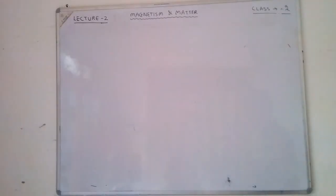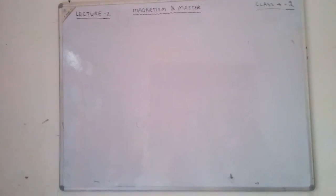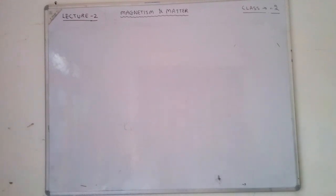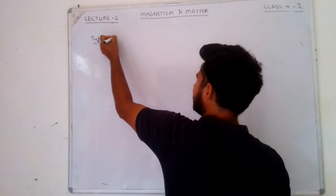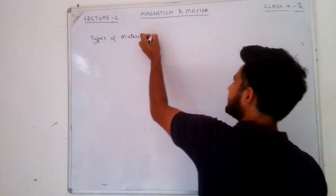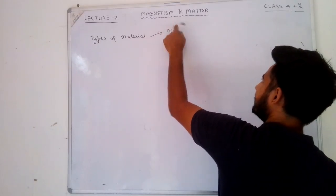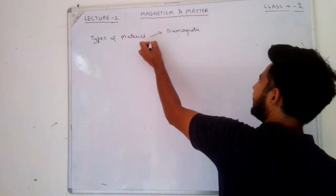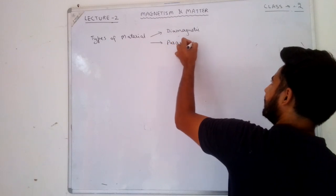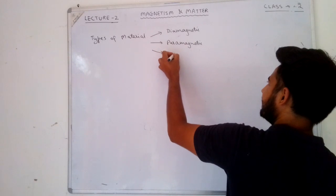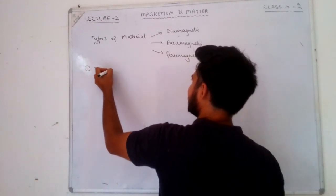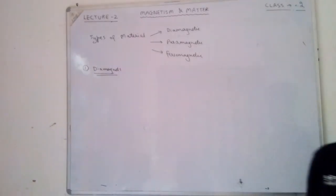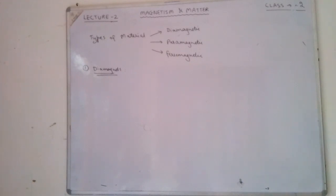Now let's discuss magnetic materials. There are several types: diamagnetic and paramagnetic. Diamagnetic materials are those which do not like magnetic field.